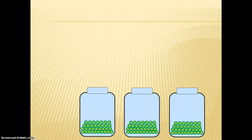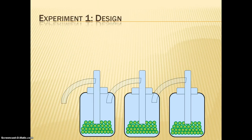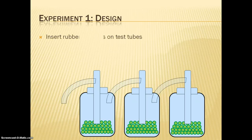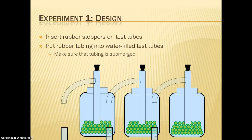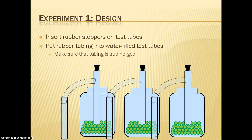Once this is done, the rubber stoppers can be inserted in tubes, which will be then placed into the respiration tubes. Here is the animation shows. Then we have the rubber tubing, and it gets put into water-filled test tubes. And you have to make sure that the tubing is submerged.